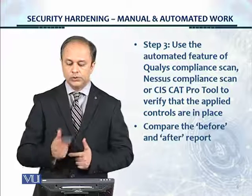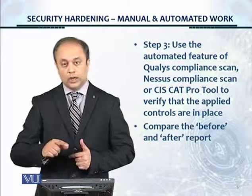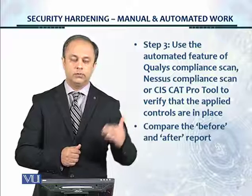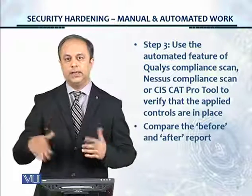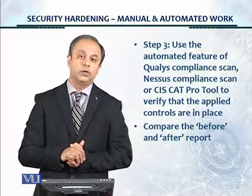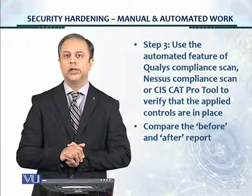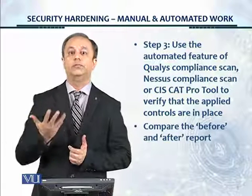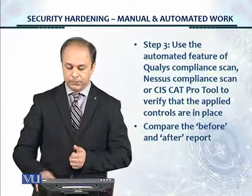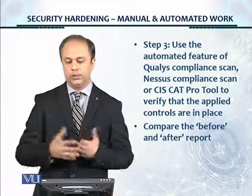Step three: use the automated feature of Qualys compliance scan, Nessus compliance scan, or CIS-CAT Pro to again verify that the applied controls are in place. We started with a scan, found the failed controls, fixed them, and now run another scan to confirm. For example, if you fixed 200 of the 250 failed controls, the new scan should show only 50 remaining failures. Compare the before and after results as your validation check.